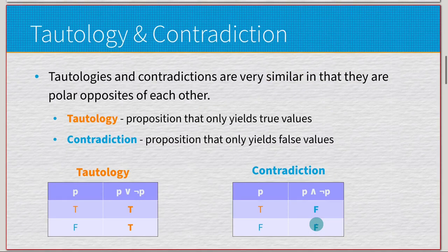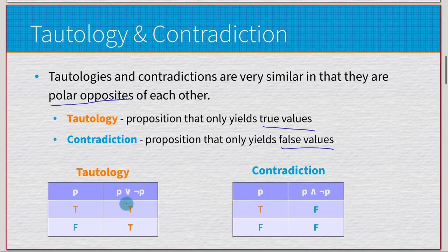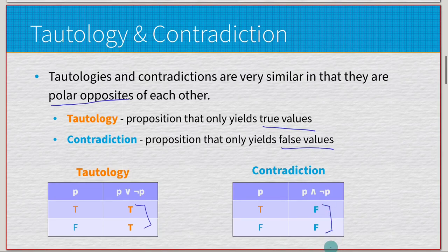Moving on, we have two very specific types of logical equivalency: tautology and contradiction. They're very similar but polar opposites. A tautology is a proposition that only yields true values, whereas a contradiction is a proposition that only yields false values. With a single variable p — true and false — a tautology always gives true. And for a contradiction, p conjoined with negated p always yields false.